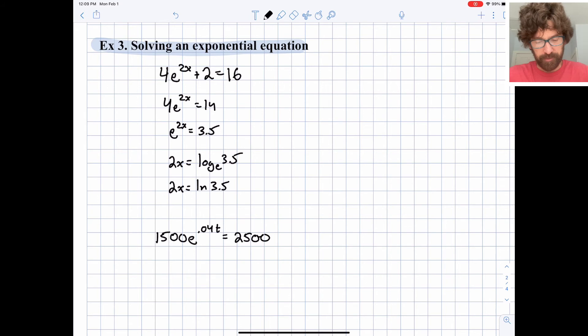I can divide both sides by 2 and I get x is equal to the natural log of 3.5 divided by 2. I'll go to my calculator and get a decimal approximation. That's roughly 0.6264.